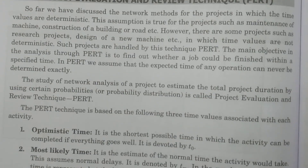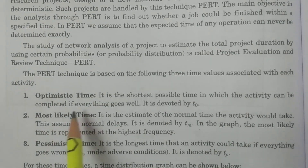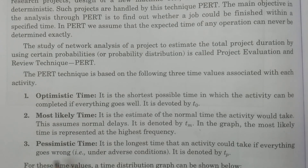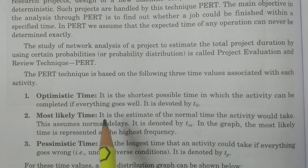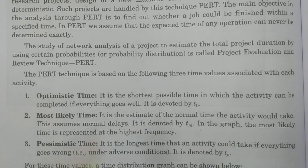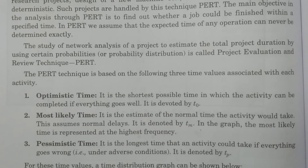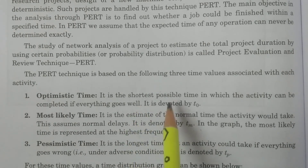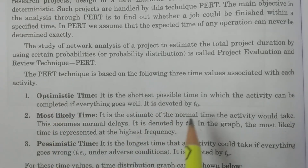In PERT, we generally use three time periods: optimistic time, most likely time, and pessimistic time. Optimistic time is the shortest possible time in which the activity can be completed if everything goes well. If everything goes right, that particular activity will be finished in the shortest possible time, and that time is called optimistic time, denoted by T-naught.